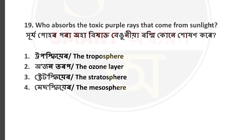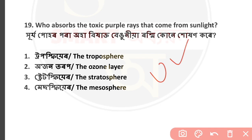Question number 19: Who absorbs the toxic ultraviolet (UV) rays that come from sunlight? The UV rays — ultraviolet rays — are absorbed by the ozone layer. Option number 2 is correct.